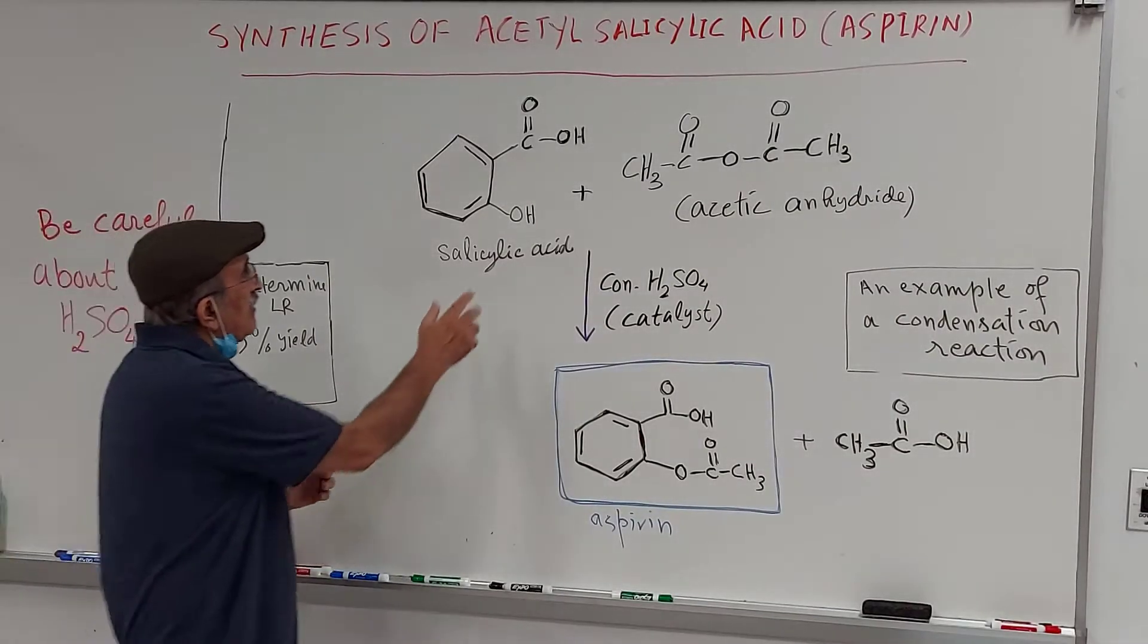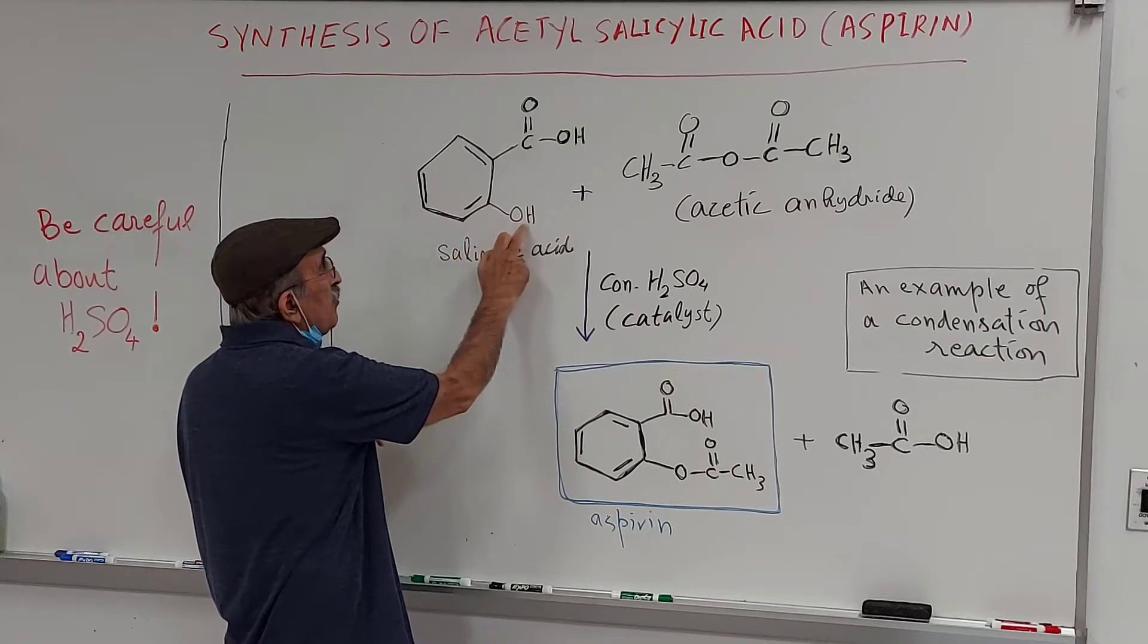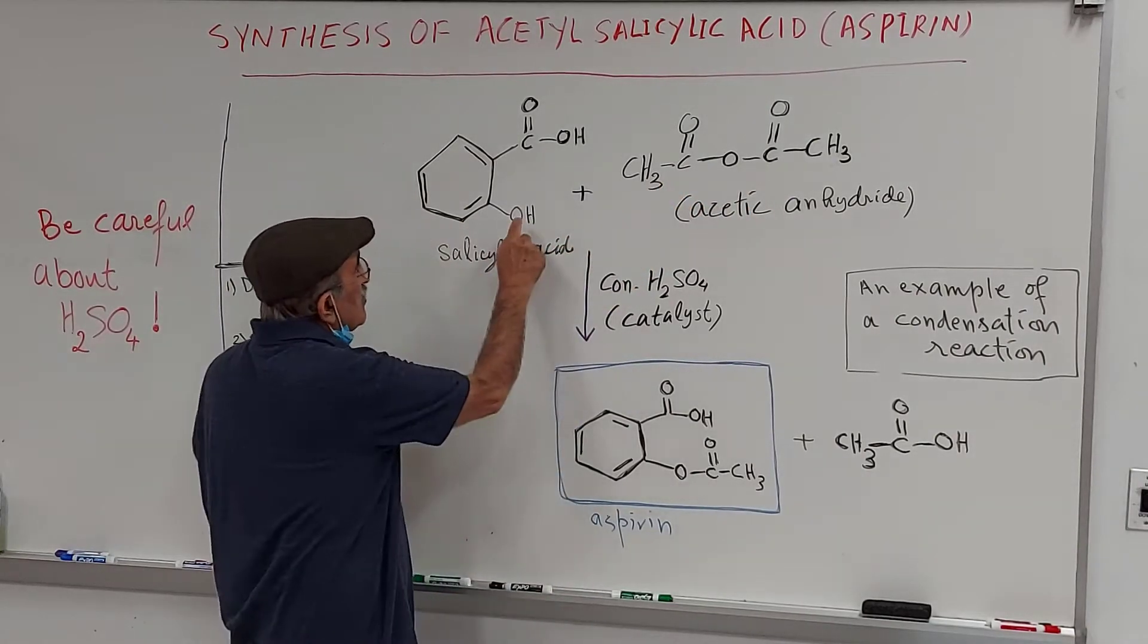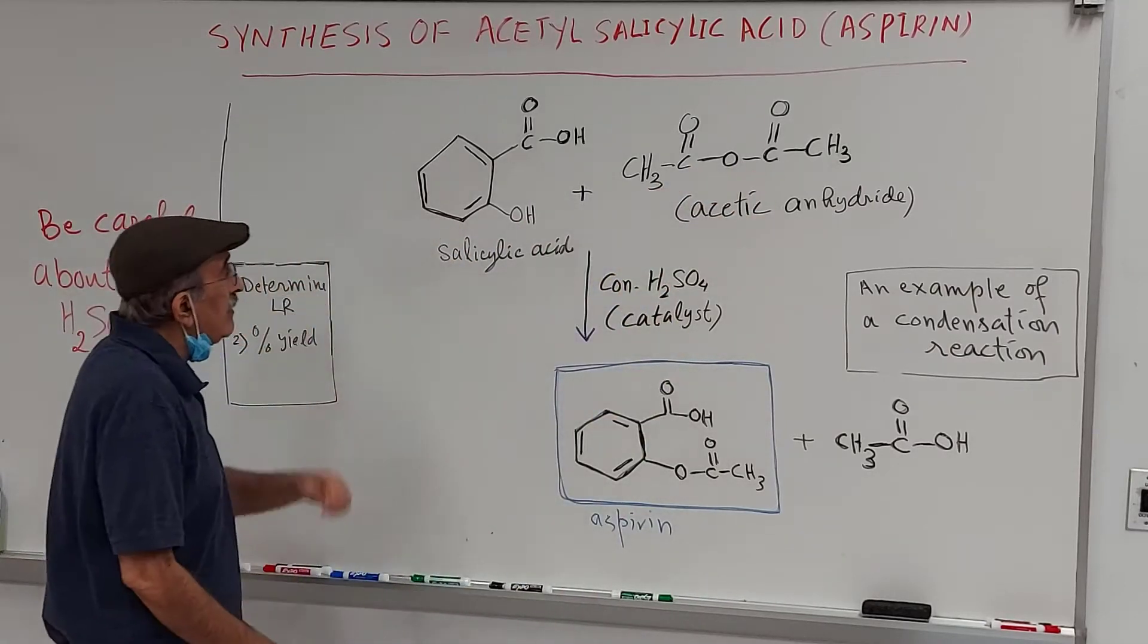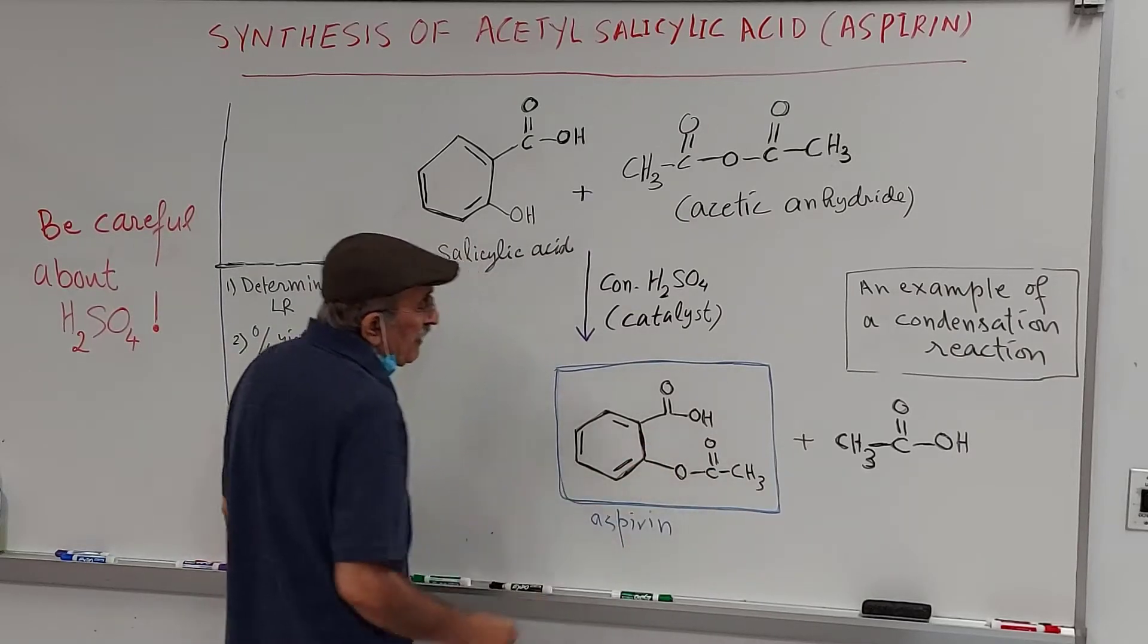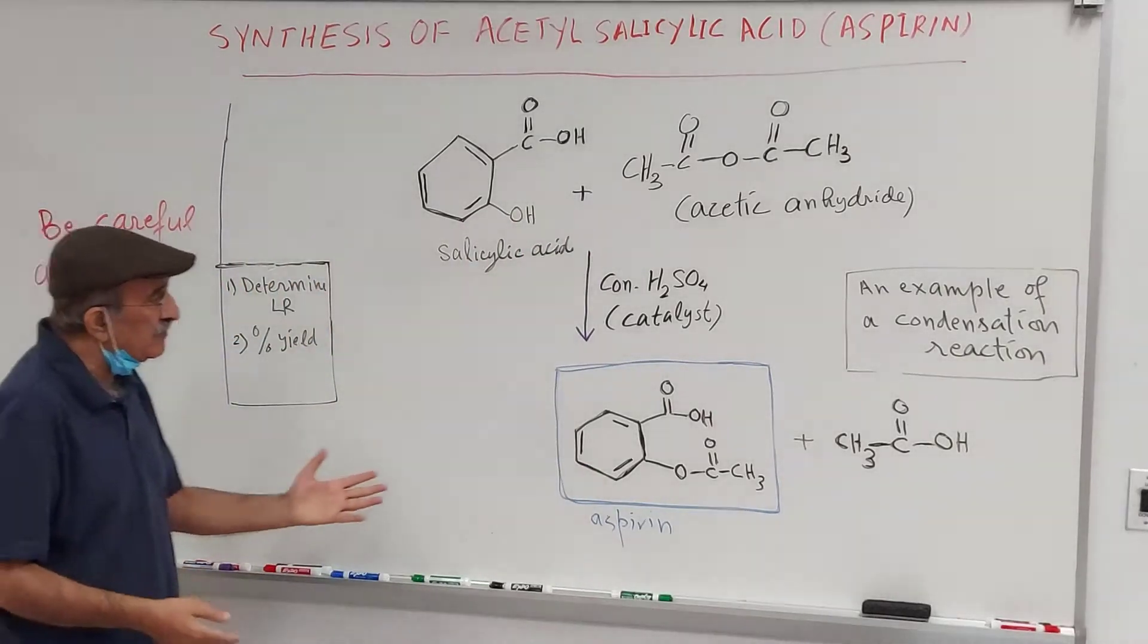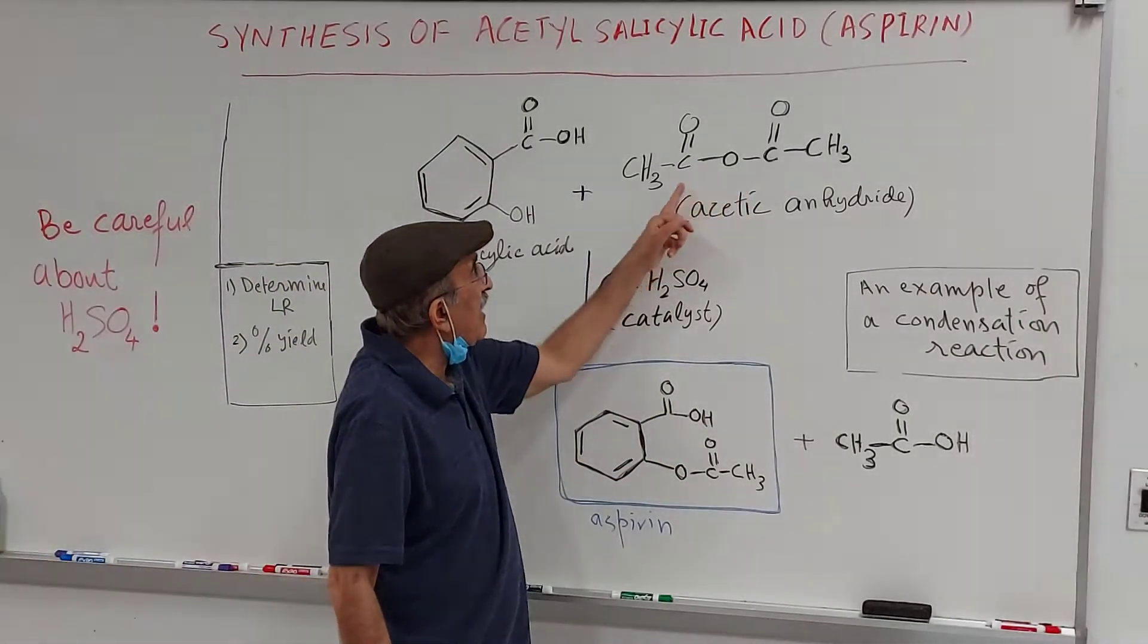In this reaction we have a nucleophile which is the hydroxyl group of this phenol, the phenolic OH. These two carbon atoms are the electrophilic centers. The reaction occurs between this oxygen and either this carbon or that carbon, and so you have an acetic group introduced. This is a new bond formed between this part and OH. That's why it's called an esterification reaction because this has an acetic group, this is a carboxyl group.